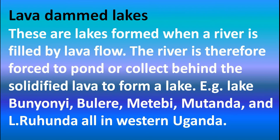As the lava flowed, it found its way into the bank of the river and solidified, thus blocking the river flow and forcing the river to pond — forming a dam behind, hence creating lakes like Lake Bunyonyi, Lake Bulera, Lake Matebe, and Mutanda. So initially it was a river flow, but with the flow of lava it blocked the river, forcing it to pond behind and hence form a lake.